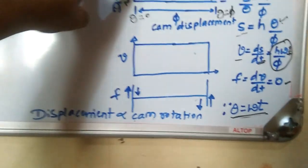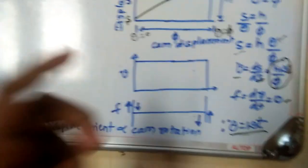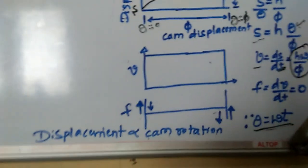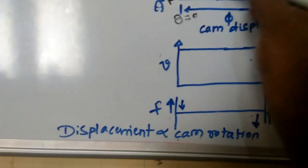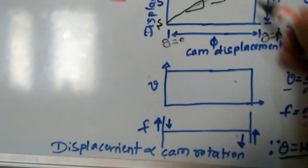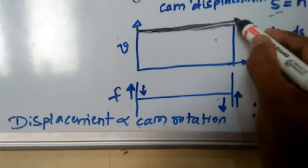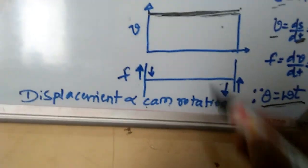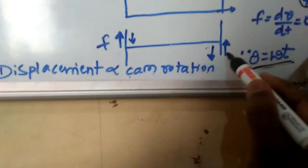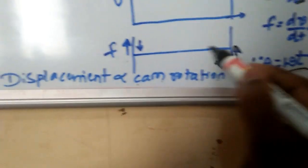Looking at the displacement diagram, velocity diagram, and acceleration diagram for constant velocity motion: the displacement is a straight line. There is no change in velocity, so the velocity is constant. When there is no change in velocity, acceleration becomes zero. However, at the beginning and at the end of the motion, there will be some jerks — sudden changes in acceleration.